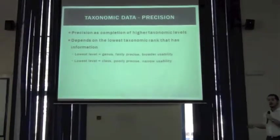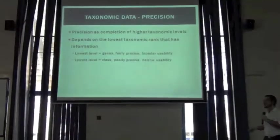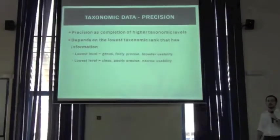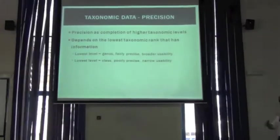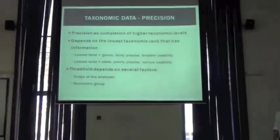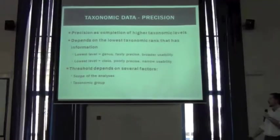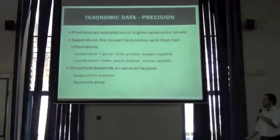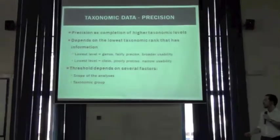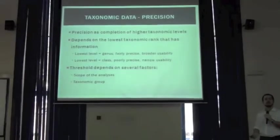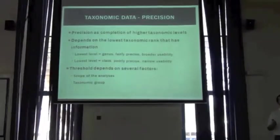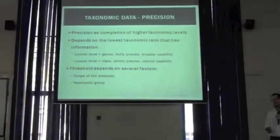If our lowest level is class, that's not very precise taxonomic information. We might not be able to use it for many purposes, but only for the most high-level assessments. The threshold of acceptability depends on several factors, among them the scope of the analysis and the taxonomic group. Depending on the analysis we want to do, more or less precise taxonomic information would be sufficient or not.